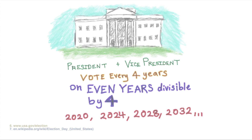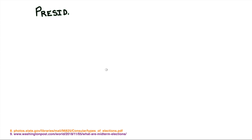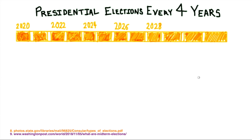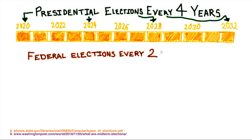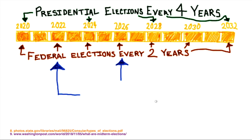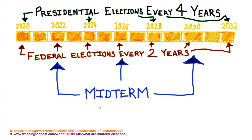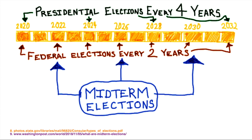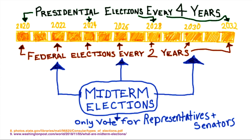Election years when you vote for the president are called presidential election years. Since federal elections happen every two years, every other election happens in the middle of a president's four-year term of office, and these elections are called midterm elections. So in midterm elections, you will only be voting for representatives and maybe a senator.